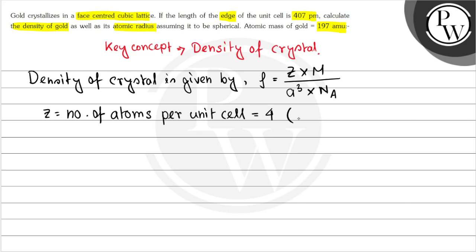Which here will be 4, because the unit cell given is FCC or face-centered cubic. For face-centered cubic, the number of atoms per unit cell is 4. M is the atomic mass of the element, that is 197.